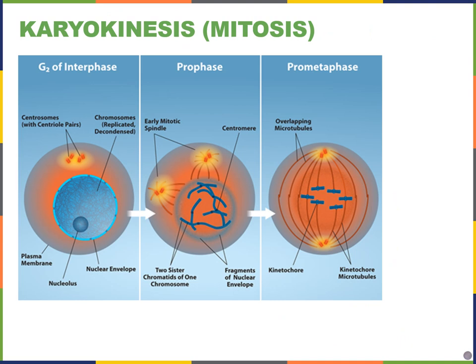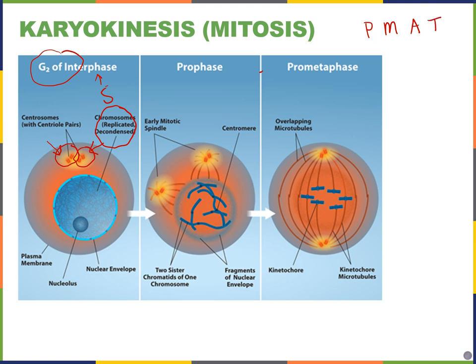Let's look in more detail at the individual stages of mitosis. By the end of G2, the centrosome has already duplicated — one pair of centrioles becomes two pairs. The chromosomes were already replicated during S phase. When G2 is complete, the cell begins mitosis. There are four general phases: prophase, metaphase, anaphase, and telophase — I remember PMAT to recall the phases.